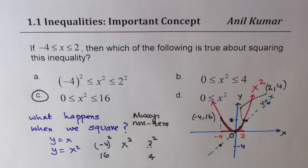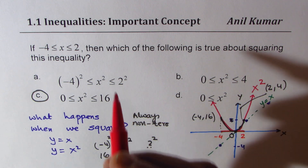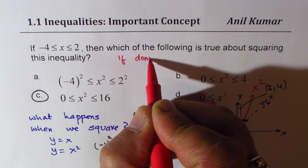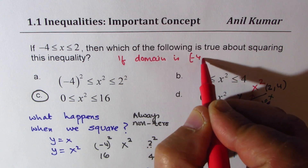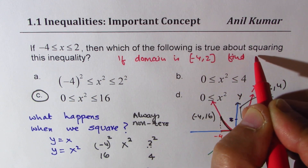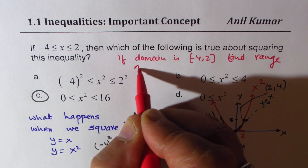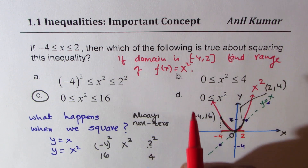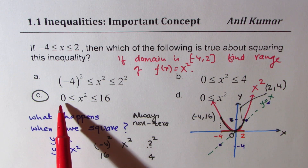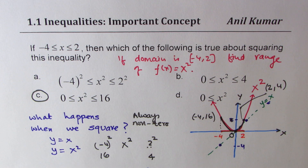This question is extremely important and is also related to domain and range: if the domain is from minus 4 to 2, find the range of the function X squared. The range is from 0 to 16. I hope that connects quite a few things. The whole idea is to understand the basic concepts of inequalities and then get into the details, and I hope now we are ready for that.